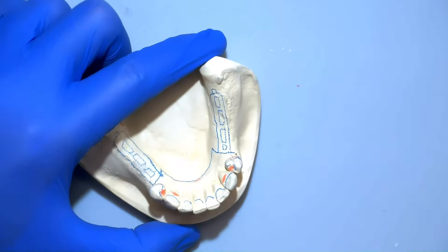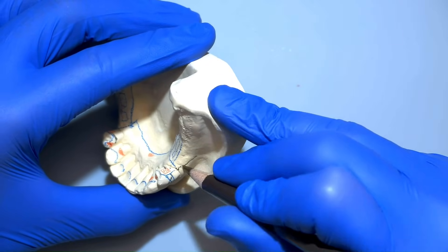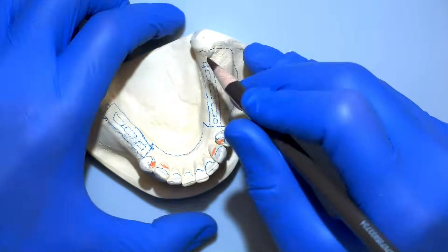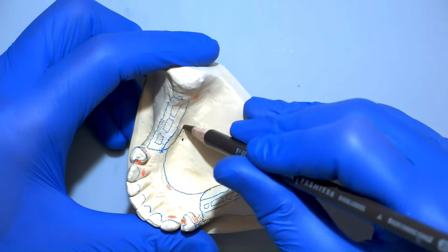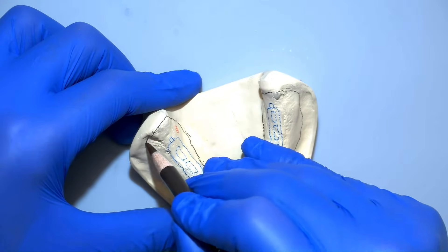Denture base comes out of the proximal plate down to the depth of the vestibule, up around the retromolar pad, and then back down towards the finish line, making itself flush with the metal of the lingual plate.